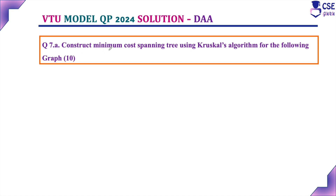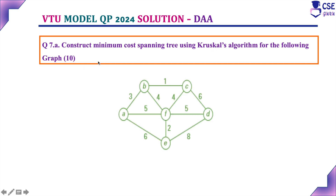Question number 7: Construct a minimum cost spanning tree using Kruskal's algorithm for the following graph. It is a 10-mark question. For this given graph we need to find the minimum spanning tree using Kruskal's algorithm.